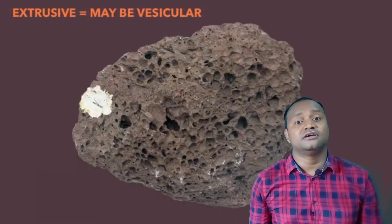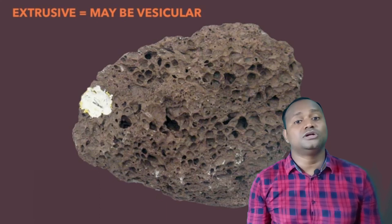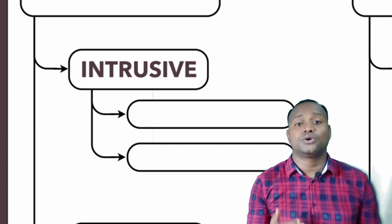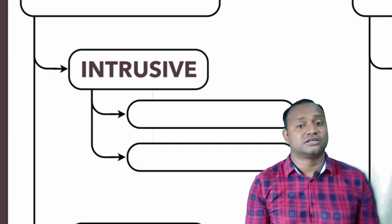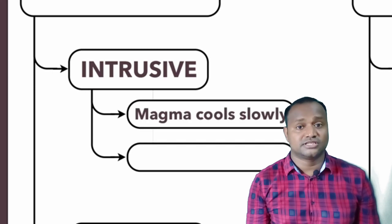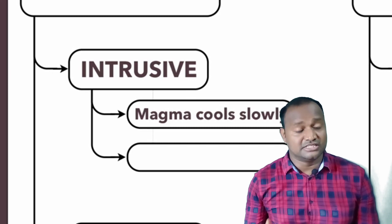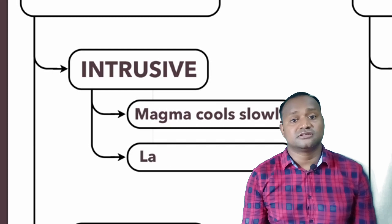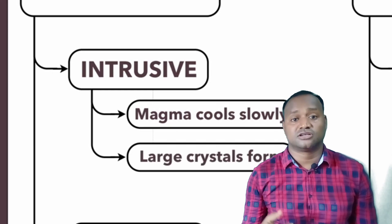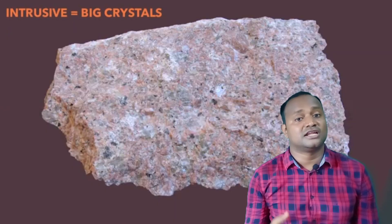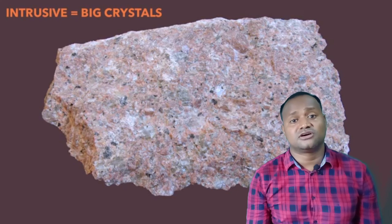Intrusive igneous rock is formed when molten magma cools down below the Earth's surface. Because the cooling process is slow, it forms large crystals. It contains lots of aluminium and feldspars, and most importantly it has very less amount of oxides because it does not come into direct contact with the atmosphere. Due to that, these rocks are not dense in nature.